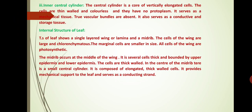Next we discuss about the internal structure of leaf. The TS of leaf shows a single-layered wing or lamina and a midrib. The cells of the wing are large and chlorenchymatous. The marginal cells are smaller in size. All cells of the wing are photosynthetic. The midrib occurs at the middle of the wing. It is several cells thick and bounded by upper and lower epidermis; the cells are thick-walled. In the centre of the midrib there is a small central cylinder composed of elongated thick-walled cells. It provides mechanical support to the leaf and serves as a conducting strand.